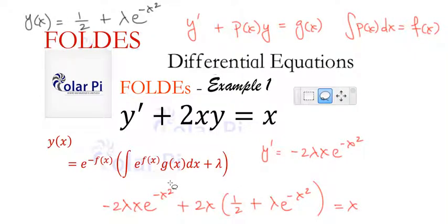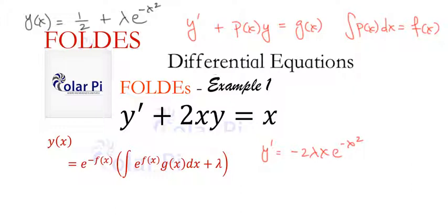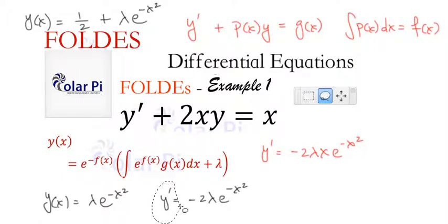Now however without the one half, if we left out the one half then look at what we'd get. Then we'd say that y of x is equal to just lambda e to the negative x squared and y prime would just be negative 2 lambda x e to the negative x squared. And so if we plug this in, well we started with y prime so let's have that and then we'll have plus 2x times y which is lambda e to the negative x squared which equals zero.